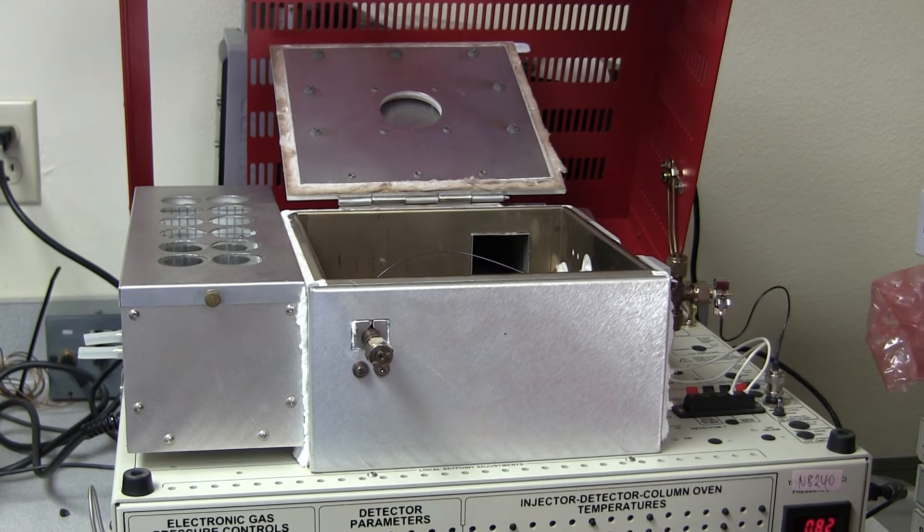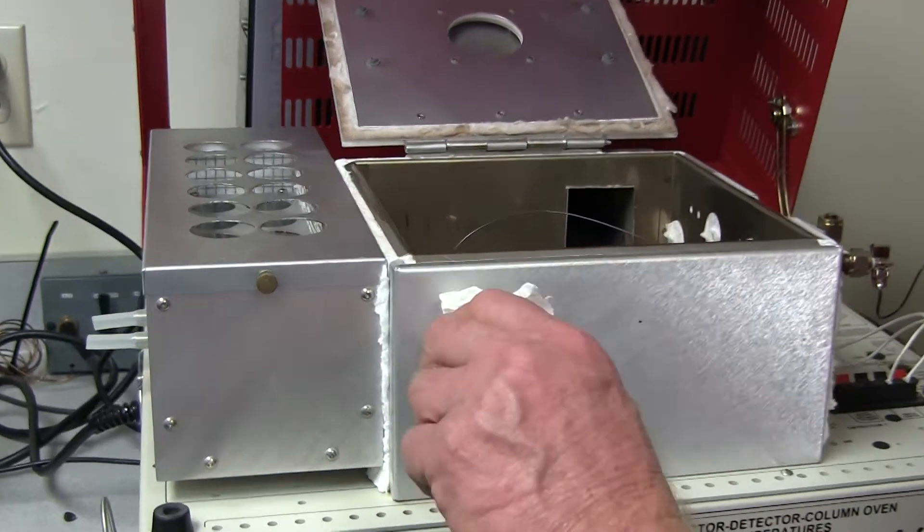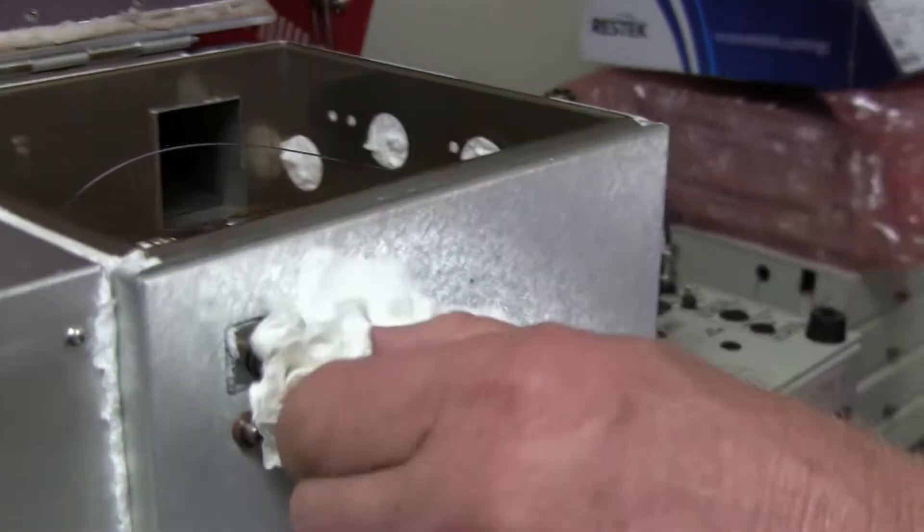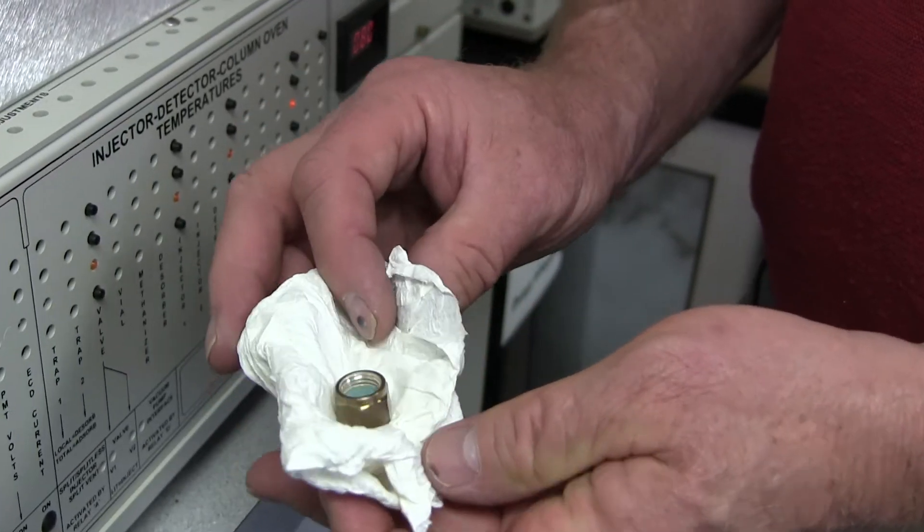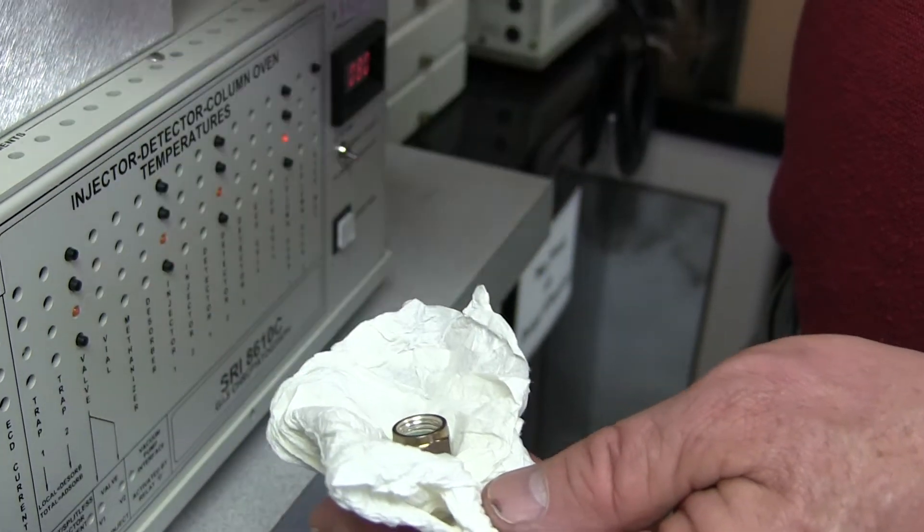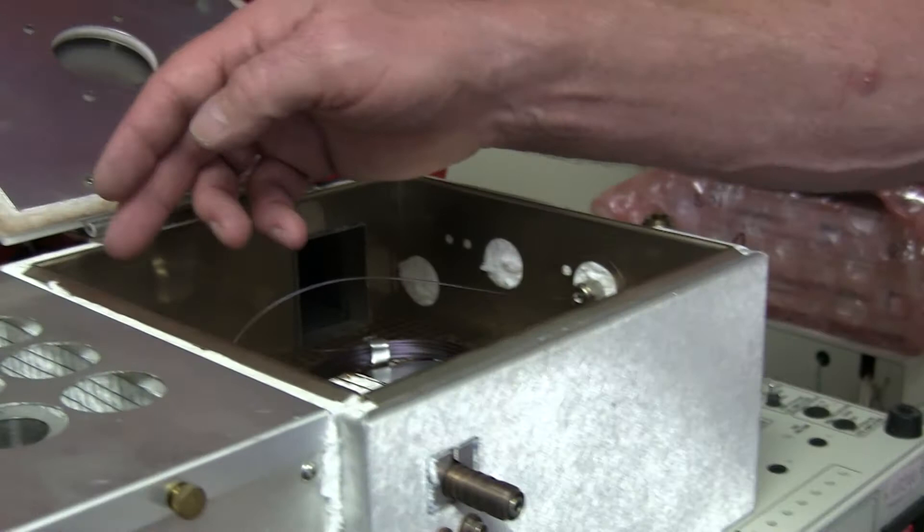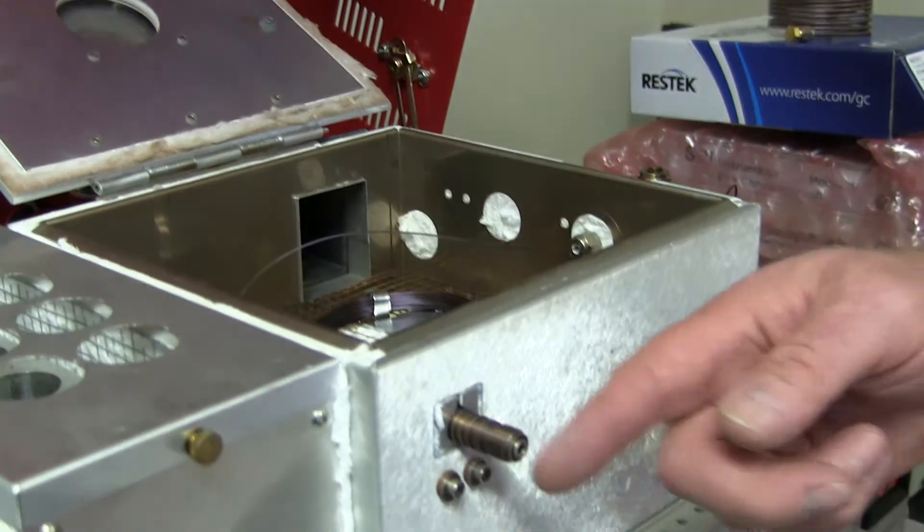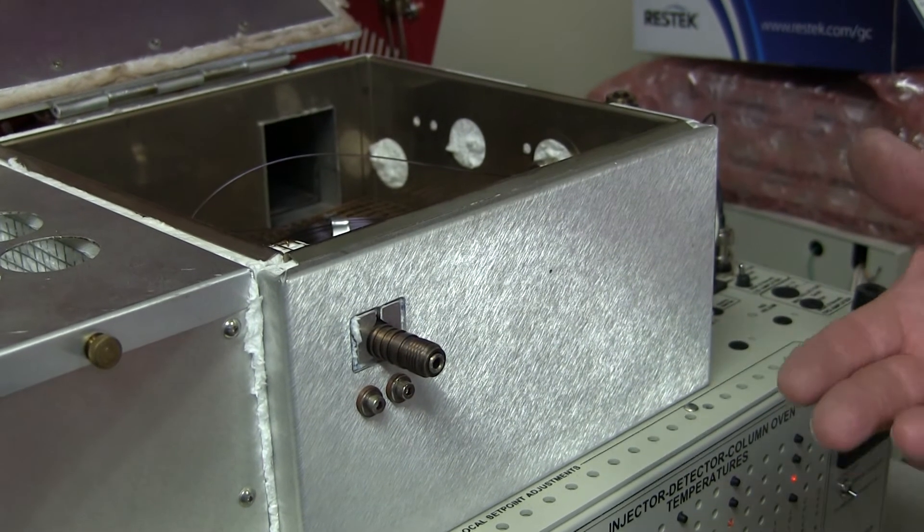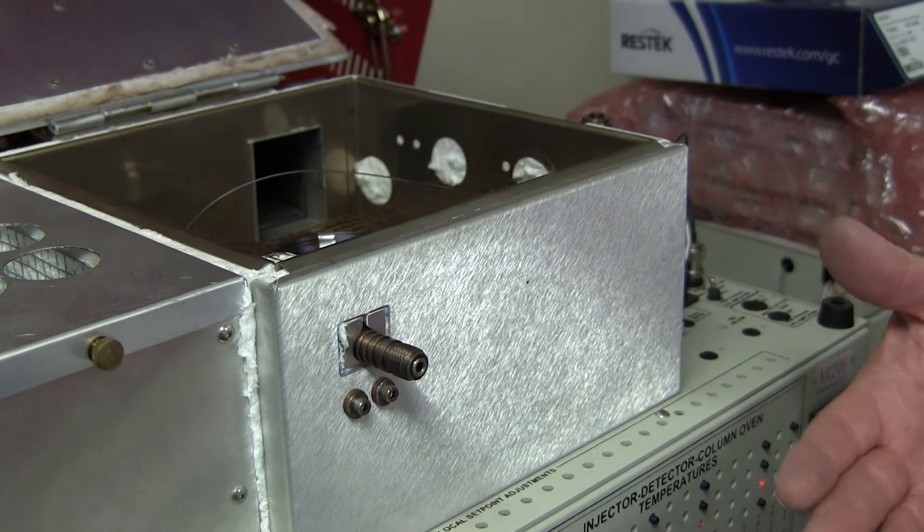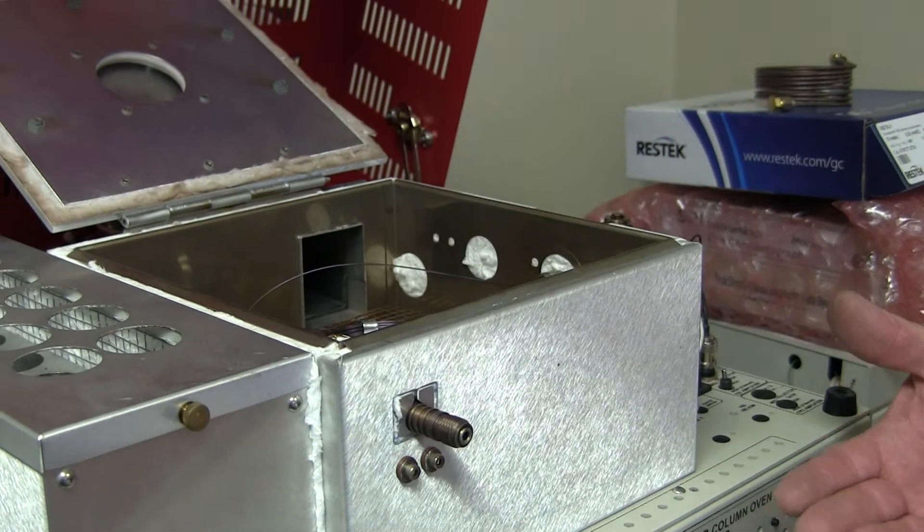So if that's going to be a problem, what we suggest you do is, while you're baking the polishing filter out, remove the septum nut from the GC. This is hot, that's why I'm handling it with a cloth. Now, the contamination from the polishing filter, instead of going onto the column, all exits out the front of the GC and none of it gets onto the column. You would choose to do that when you had something like a molecular sieve column in the GC.